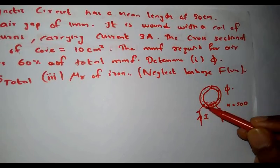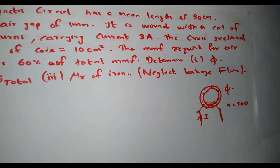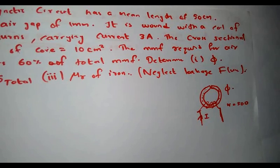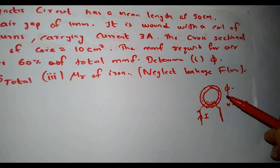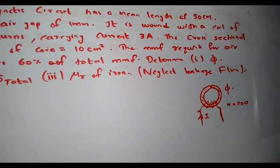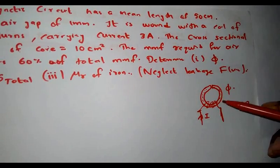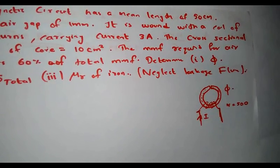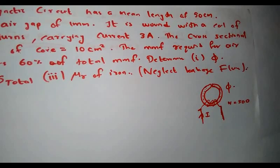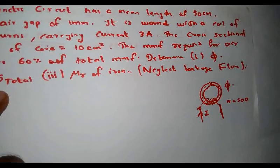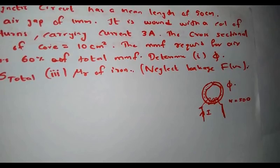This magnetic flux phi passes through two parts — the iron part and the air gap. The flux phi is opposed by the reluctance of the iron part and the reluctance of the air gap. Iron is a magnetic material, so its reluctance is low, whereas the reluctance of the air gap is high because air is non-magnetic. The total reluctance is the sum of the iron part reluctance and the air gap reluctance.